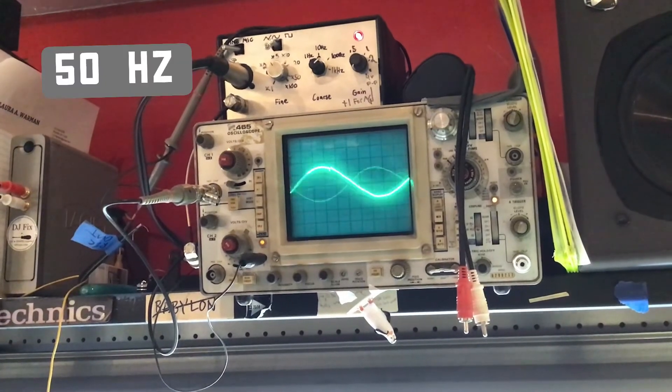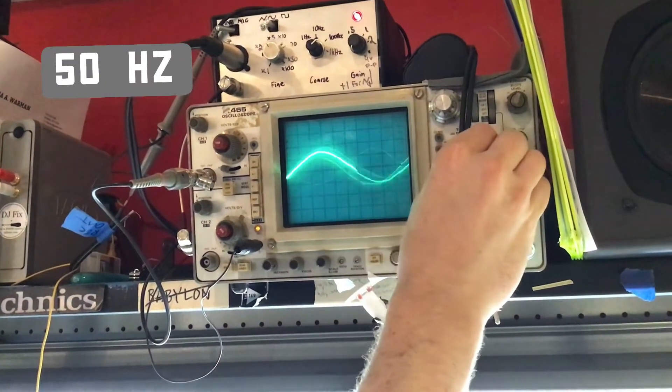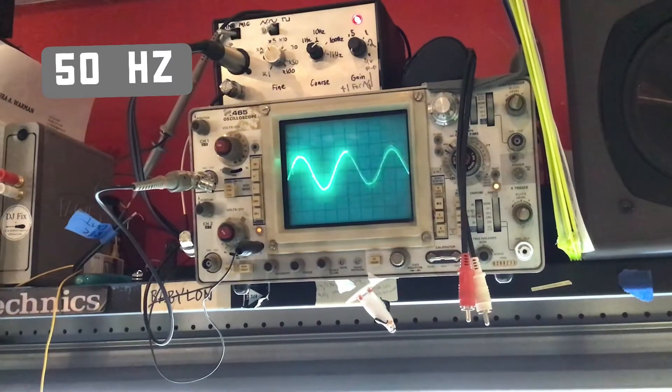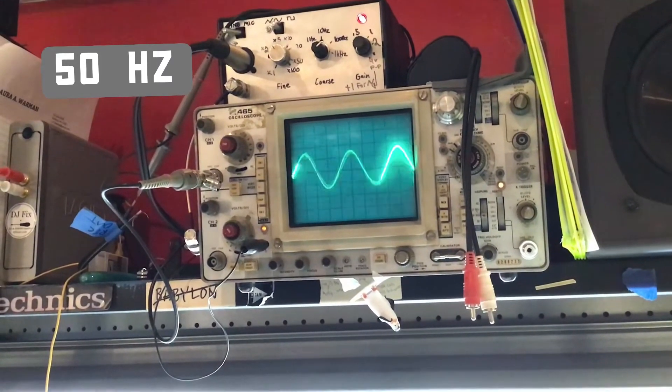50 cycles. 50 is getting pretty low. Nice strong signal. Looks very linear.